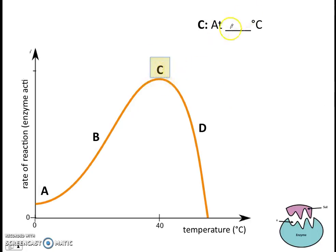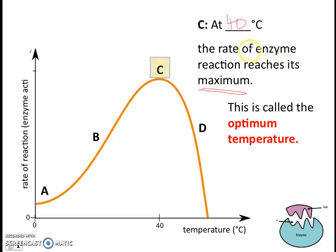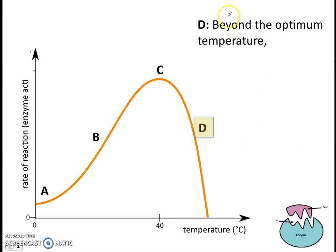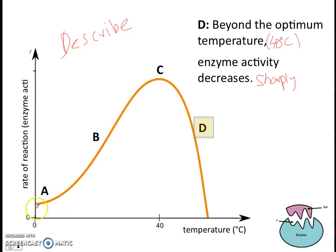Moving to point C, which is at the optimum temperature — in this case, 40°C. At 40°C, the rate of enzyme reaction reaches its maximum; it is the highest. This temperature is called the optimum temperature, where the rate of enzyme reaction is at its maximum. Finally, point D: beyond the optimum temperature of 40°C, enzyme activity decreases — and we can say it decreases sharply. This is how you describe sections A, B, C, and D of the curve.